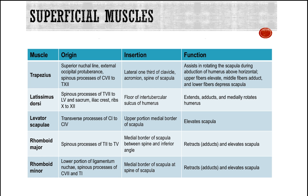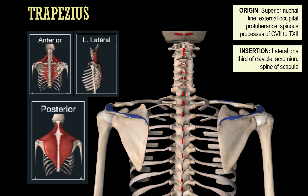The trapezius assists in rotating the scapula during initiation of abduction of the humerus and also elevates and depresses the scapula. Levator scapula, as the name implies, elevates the scapula based on its attachment points, in conjunction with the rhomboid muscles, which adduct the scapula toward the midline and aid in elevation. Latissimus dorsi functions to extend, adduct, and medially rotate the humerus. Using the anatomical depiction, we can see from anterior, posterior, and lateral views just how wide-spanning this trapezius muscle is, arranged in its classic diamond shape.